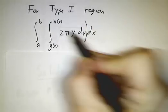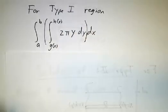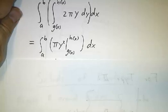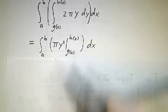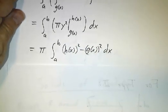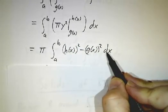What's the integral of 2πy dy? Well, that's just πy². πy² evaluated at h and g gives you π times h² minus g² dx.